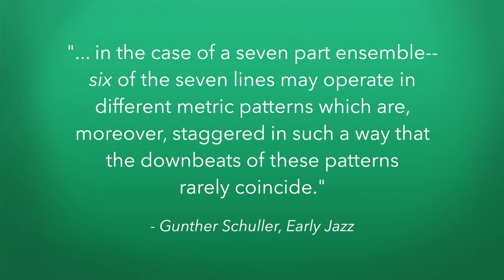Another difference with European music is that harmony and melody are more important than rhythm. If you contrast that with African music, rhythm is the most important thing, and you can really hear that emphasis in a lot of the music today that comes from African roots. Not only was rhythm the dominant feature, but it was incredibly complex. For example, in a seven-part ensemble, six of the seven lines may operate in different metric patterns, staggered in such a way that the downbeats of the patterns rarely coincide.